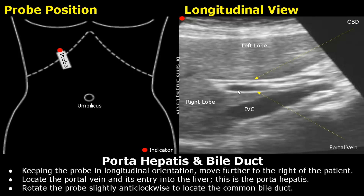This is the portal vein with hyperechoic walls. Then rotate the probe slightly anticlockwise until you see the common bile duct. It will be anterior to the portal vein. This is the common bile duct. You can measure its diameter in this view.